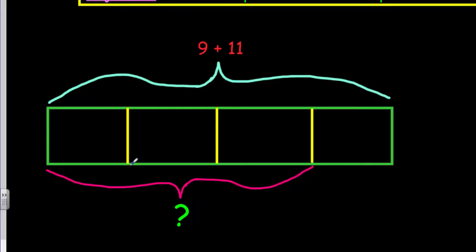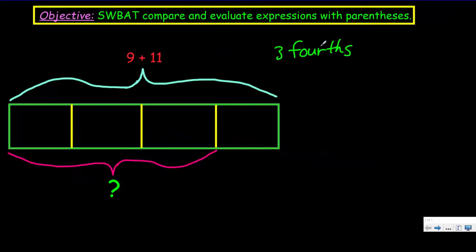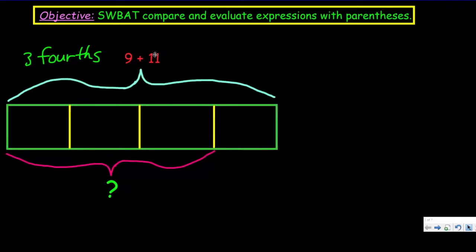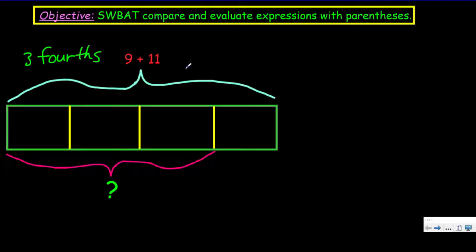Our whole here appears is the sum of 9 and 11, and I have that right here. How many units is this sum being divided into? Let's count. Uno, dos, tres, cuatro. That's right. It's in four different little sections.